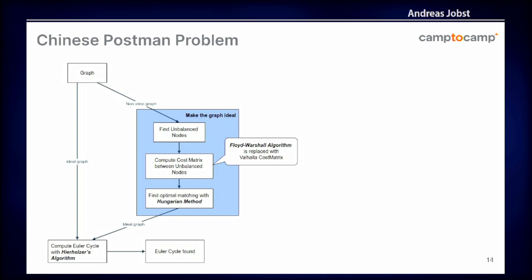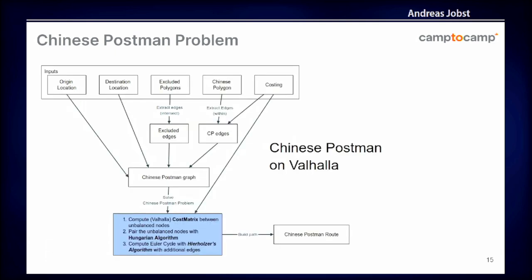The Floyd-Warshall step is taken care of by the time and distance service of Valhalla. In terms of inputs, you need to define the start point and end point — they should be inside the area of interest. You can define no-go zones, and what's called here the Chinese polygon is the area of interest. The costing comes from different profiles as well: pedestrian, cyclist, and standard car.